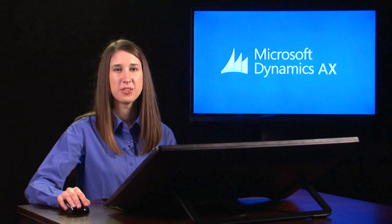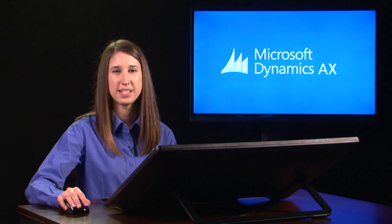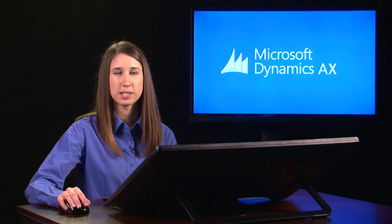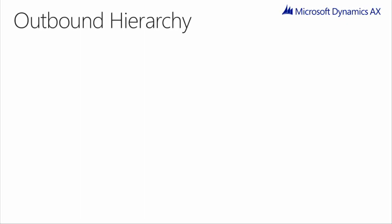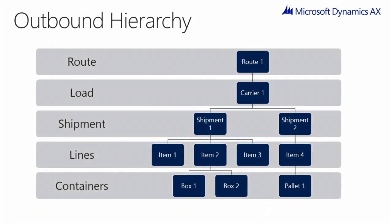Let's now discuss the outbound hierarchy overall. Throughout the distribution process, outbound shipments may be monitored and maintained at any point along the way by using the shipment and load screens. Typically, one or more shipments will be combined to form a load. A load represents an outbound entity, such as a carrier, a carrier's trailer, or an export container. Each shipment has its own order lines, which contain the item information. The relationship between shipments and loads will differ based on the mode of transportation being utilized.